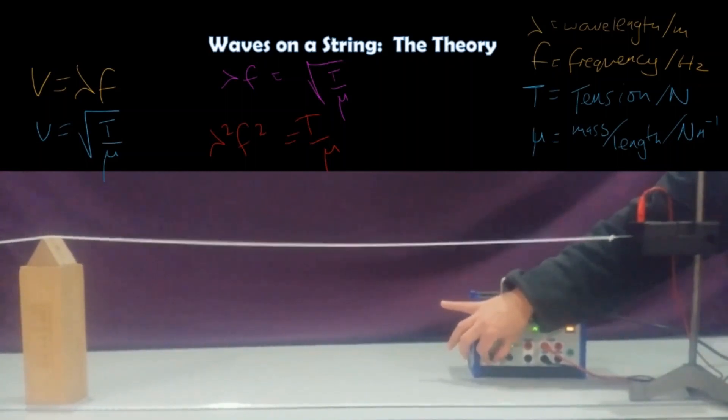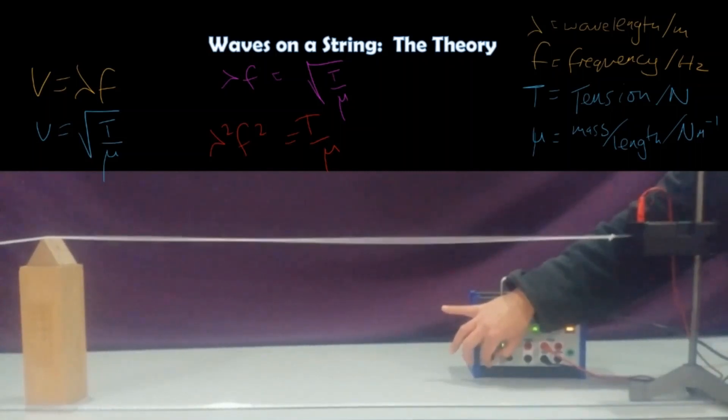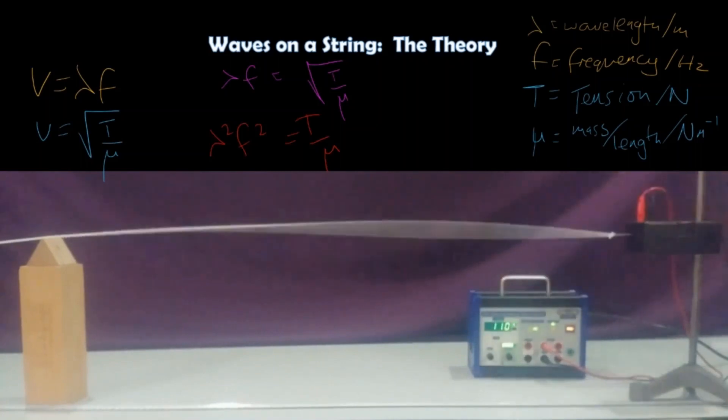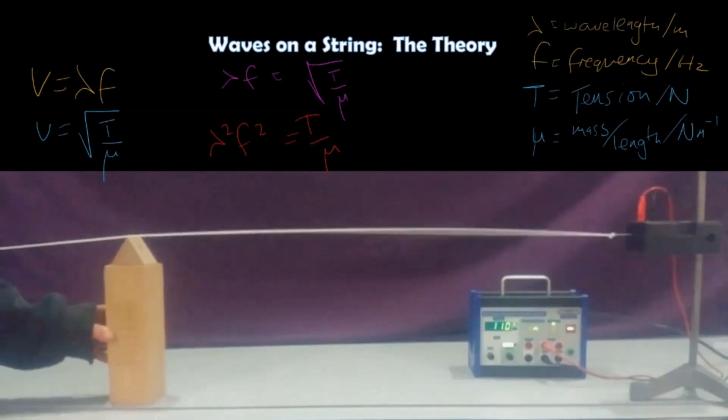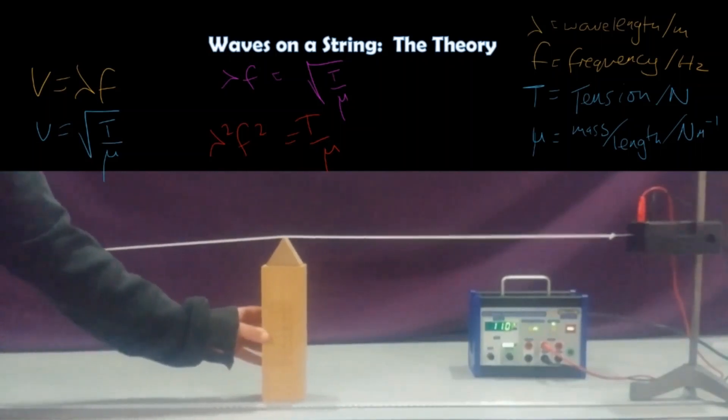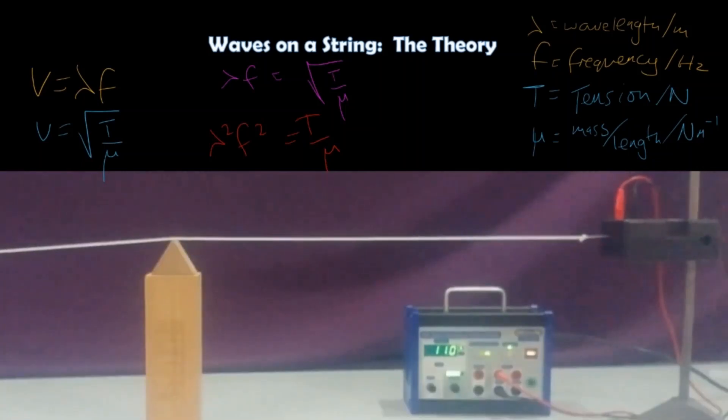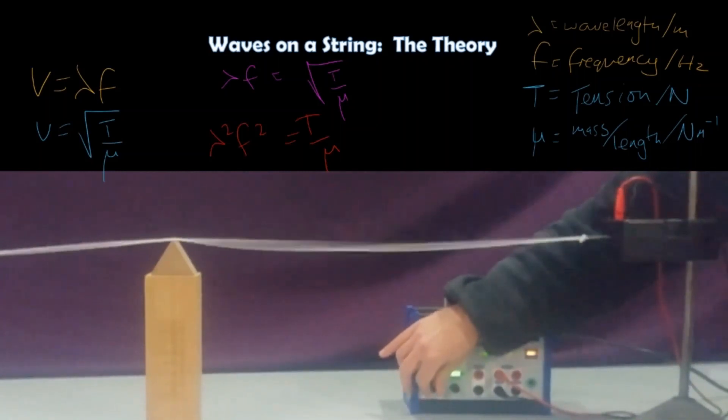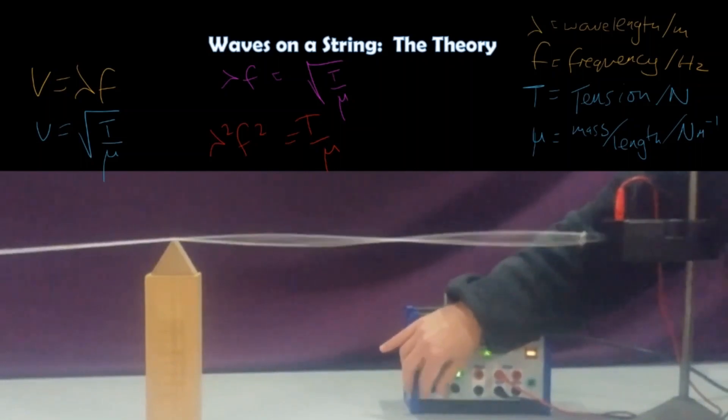This particular practical is looking at these variables and how they are related. So the whole point is you choose what to investigate. Will you change tension and measure frequency, keeping wavelength and the mass per unit length the same? Will you measure mass per unit length, change it by changing the type of string you're using, and see how that affects the frequency at constant wavelength and constant tension? So using this equation as a basis, you have to pick two variables to investigate and keep the rest constant. Then after you take your measurements, you plot a graph to see if you can verify this particular relationship.